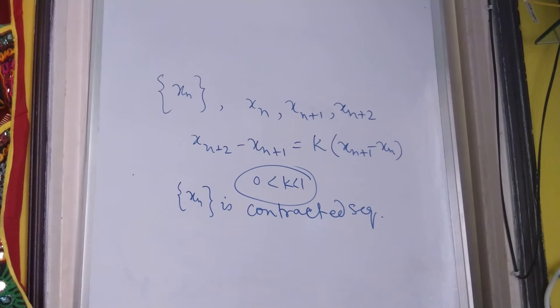So this is the contraction theorem. Whenever we have xn plus 2 minus xn plus 1 is equal to a proper fraction multiplied with xn plus 1 minus xn, we must have that sequence to be a contracted sequence which is always convergent.